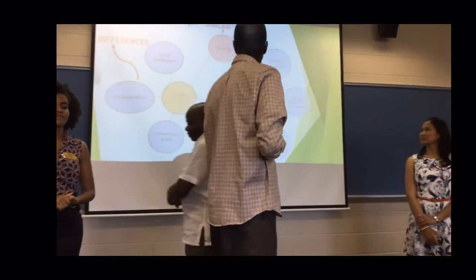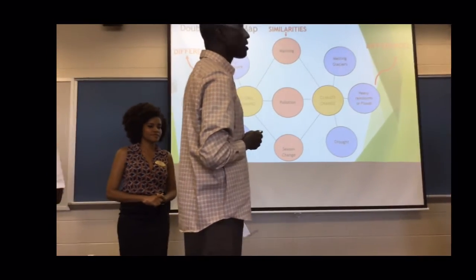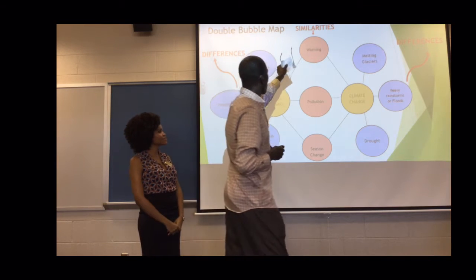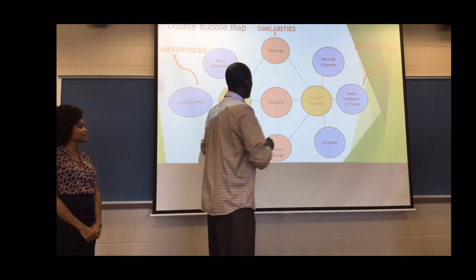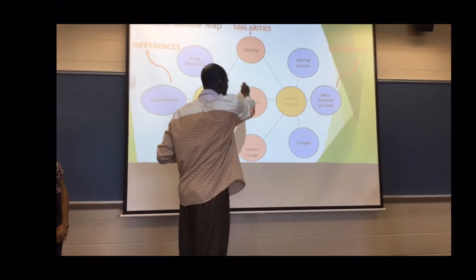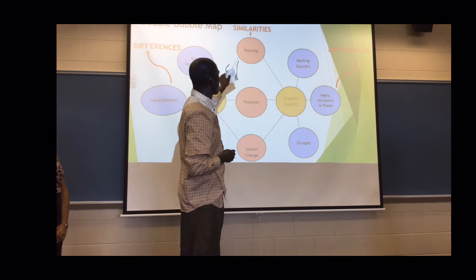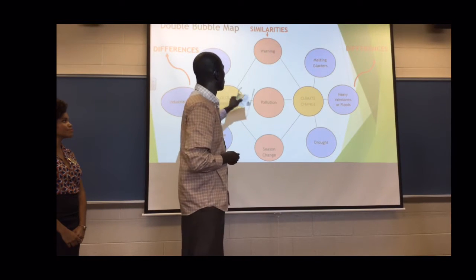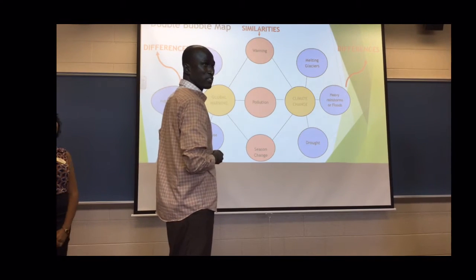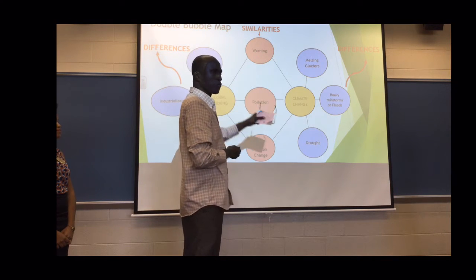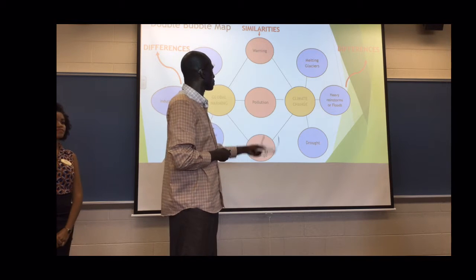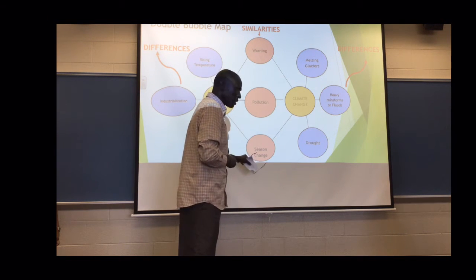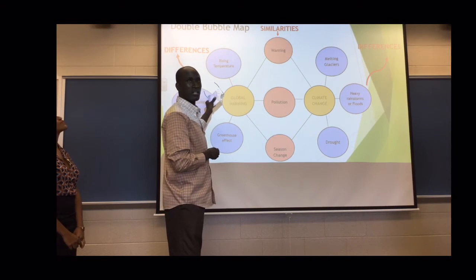Now we're going to explain the double bubble map. You don't have a double bubble map here, but we have the ideas in the inner circles, and in the outer circle we have differences, and here we have similarities. A double bubble map documents the thinking process involved in showing similarities or differences. We can use it, for example, if you have a story — we can use this to show similarities inside and differences outside.